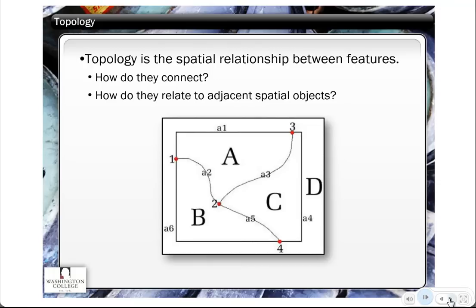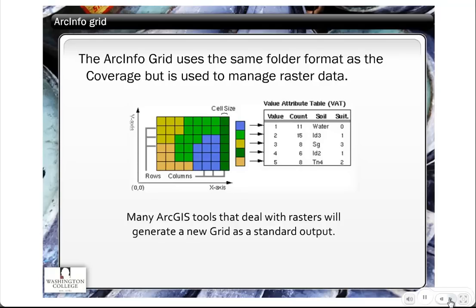If you have topology, you can validate topology rules. For example, you don't want things like overlapping polygons or gaps between polygons in different data layers. Another file format related to the coverage is the ArcInfo Grid, which uses the same folder format as the coverage, but instead of managing vector data, it manages raster data. The grid raster file format hasn't totally gone away because there are many ArcGIS tools that deal with rasters, and the standard output from those tools is a grid format.